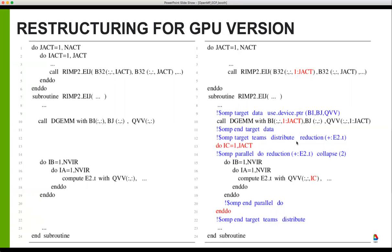The changes to note are that we increased the dimensions of the array sent to DGEMM. There is no longer an outer loop of IACT over the call to RIMP2_EIJ — that's been partially incorporated into the call to DGEMM. As with the Hartree-Fock code, this is a generic CPU-to-GPU optimization: fewer kernel launches and more work in math library calls. We then used OpenMP to express the data transfer and parallelism, and this code was implemented and evaluated in a mini-app and in a development branch of GAMESS.